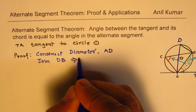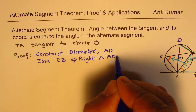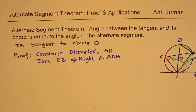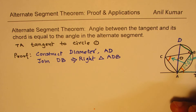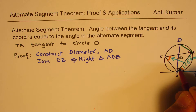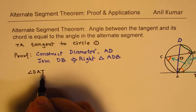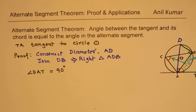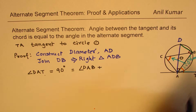This results in a right triangle ADB, since that is a triangle formed in a semicircle. Now we also know that the angle here is a right angle. We know that angle DAT equals 90 degrees, and this angle DAT is also equal to angle DAB plus angle BAT.